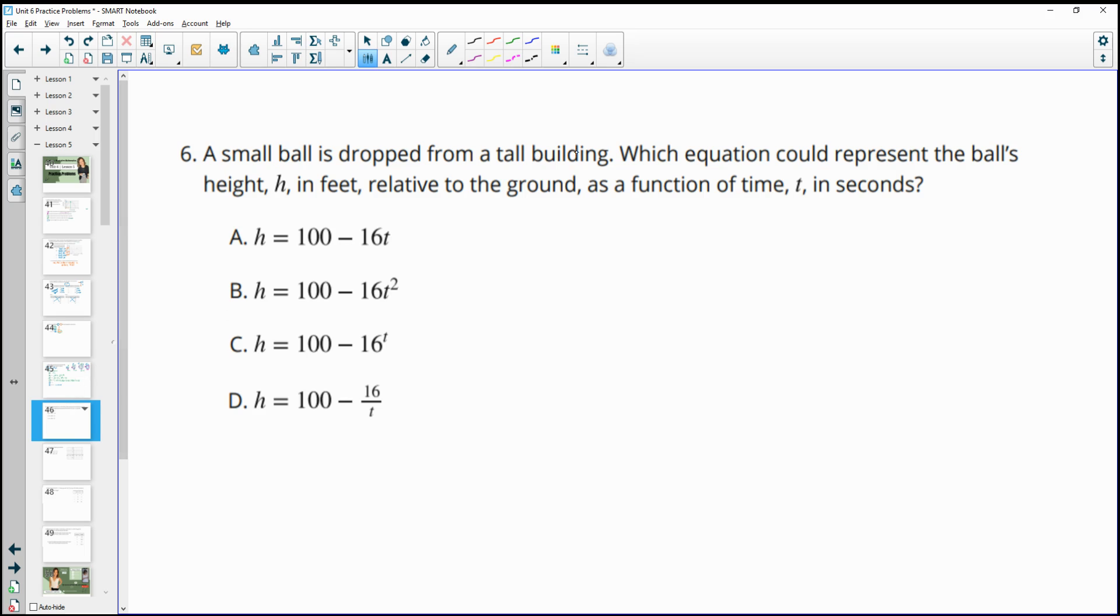Number 6, a small ball is dropped from a tall building. Which equation could represent the ball's height in feet relative to the ground as a function of time? You've been looking at a lot of these in this lesson, and these are quadratic functions when we're bringing gravity into the equation, and it's going down. It's a down quadratic. So that means you're going to need to see the input squared, so we're going to have to see t squared, and it's going to be negative. So if we look here, that's option B. And that negative 16 is gravity's speed. You're always going to see that negative 16t squared when we're talking about dropping or throwing things that are going to fall.